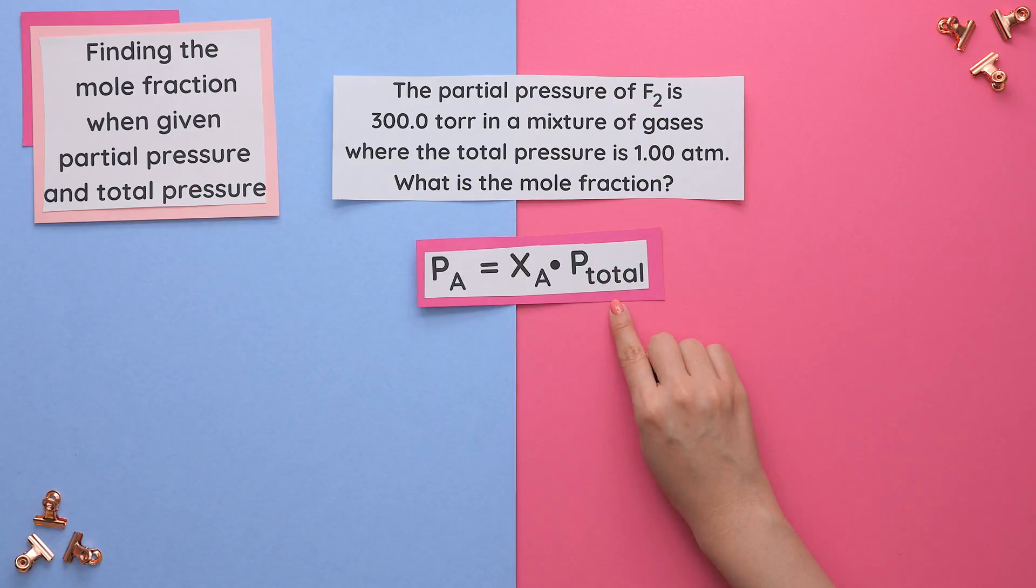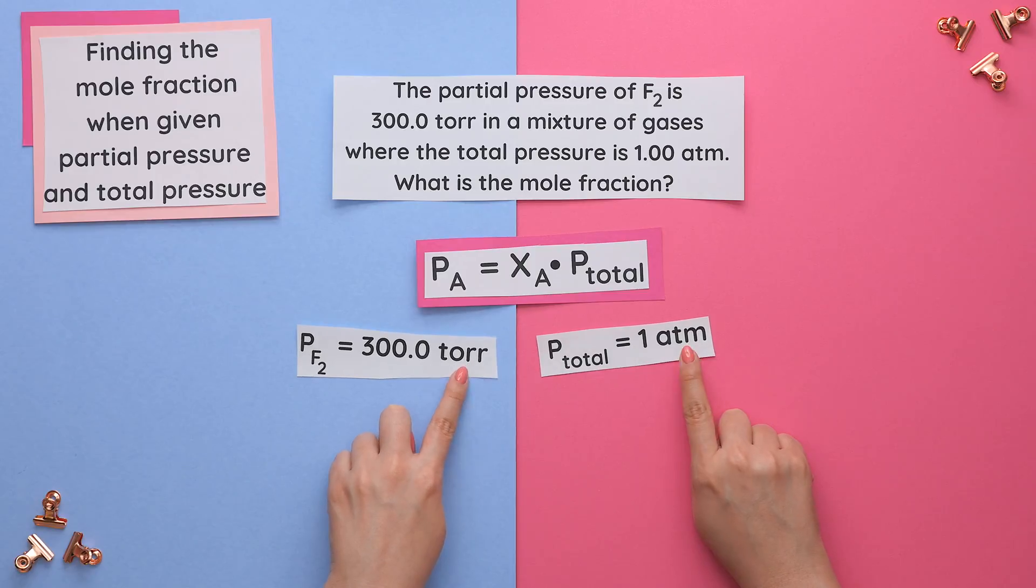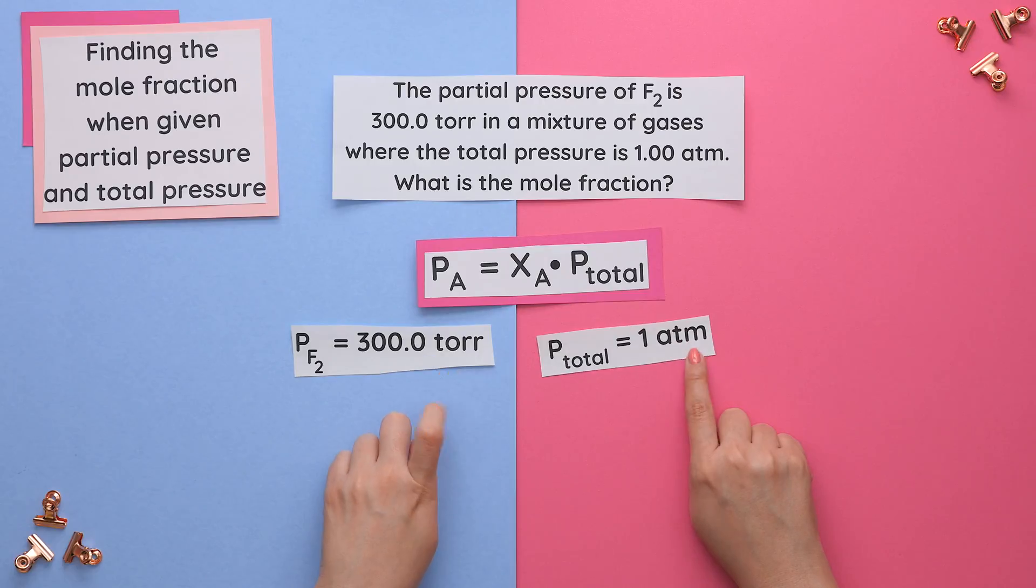We will use a different formula this time since we are given our partial pressure and total pressure. Before plugging everything into the formula, always make sure to check your units. Both pressures are in different units. We need them to be the same, so you can either have both pressures be in atmospheres or in Torr. I'll choose Torr.